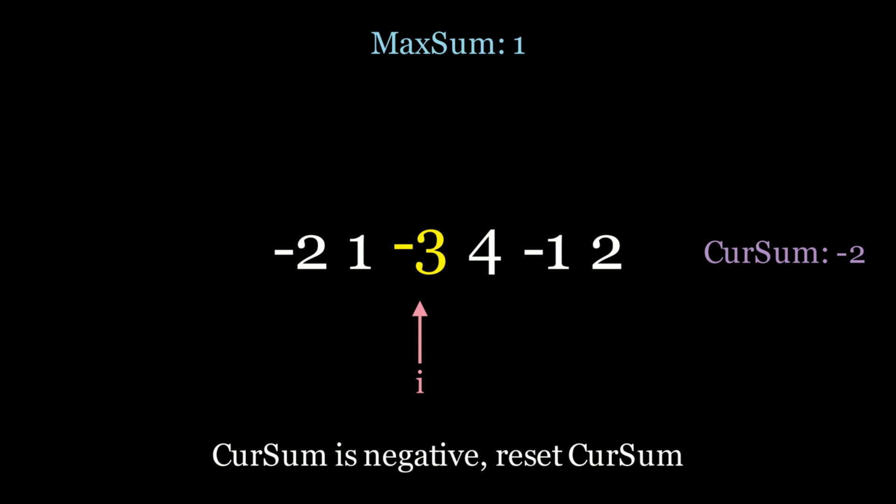And now we have to ask ourselves, is negative 2 greater than max sum? It isn't. So max sum remains 1, but cur sum is negative. So we need to reset cur sum. So let's make it 0.